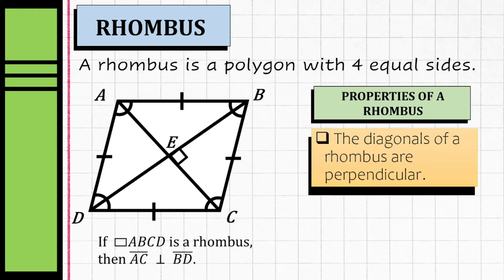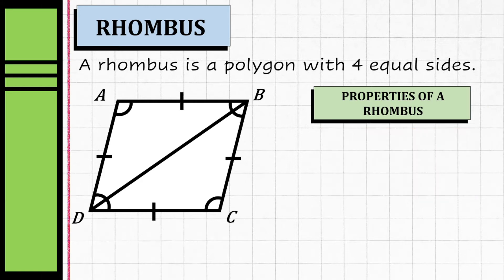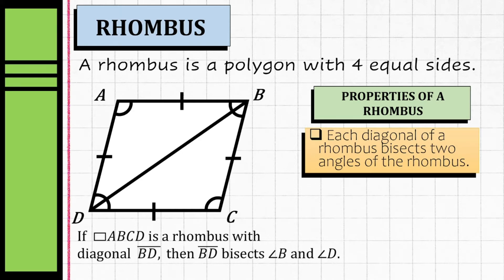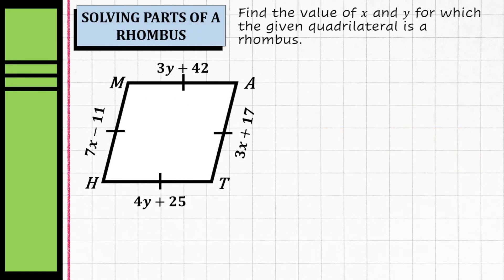The diagonals of a rhombus are perpendicular, so they will form a 90-degree angle. For example, angle BEC will be equal to 90 degrees. Additionally, each diagonal of a rhombus bisects two angles of the rhombus, meaning the angles of the rhombus will be divided into two congruent parts.